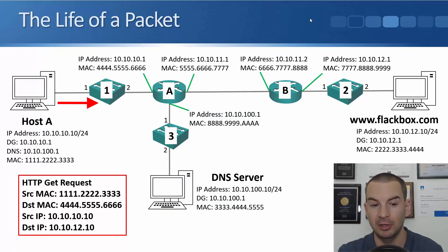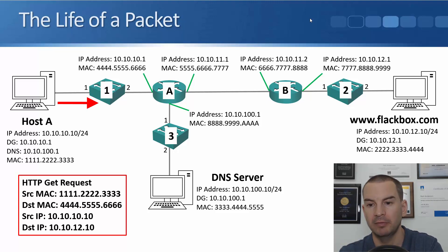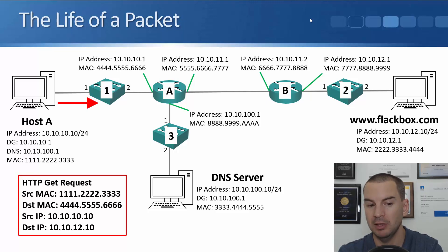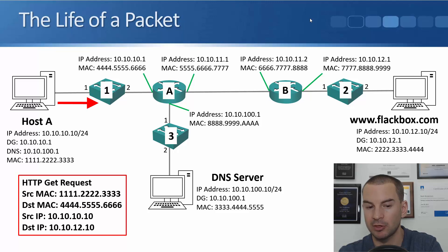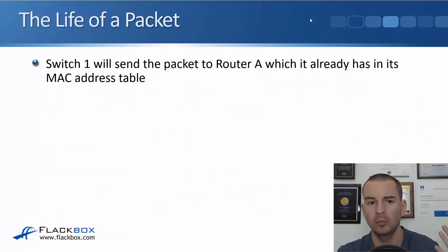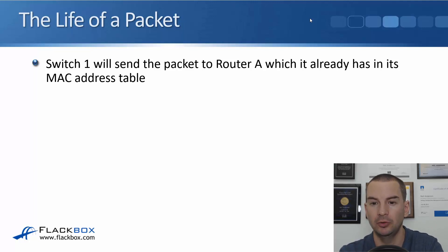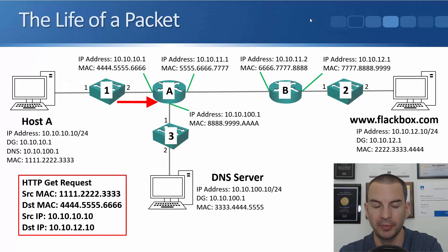Here's our HTTP GET request. The source MAC is 1.2.3, the destination MAC is the default gateway 4.5.6. Source IP is 10.10.10.10 and the destination IP is the web server at 10.10.12.10. That will hit Switch 1, which will send the packet to Router A, which it already has in its MAC address table.